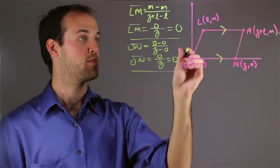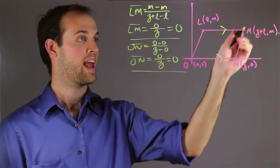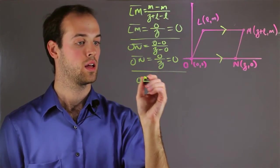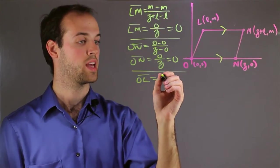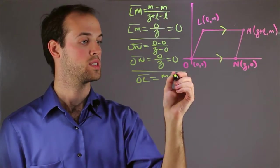Now we want to see if OL is parallel to NM. So let's take a look. Again, I want to take the second y-coordinate, which is M, subtract the first y-coordinate, which is zero.